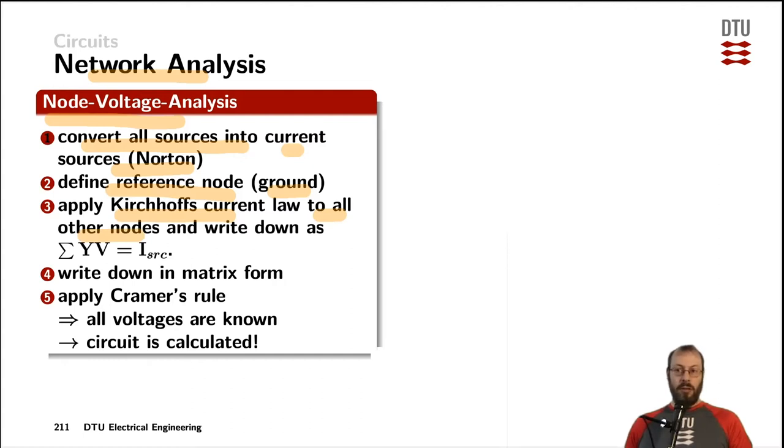And then for each node, you can define all the currents flowing into and out of a node by Ohm's law, using the voltages across the components and multiply them with their admittances.